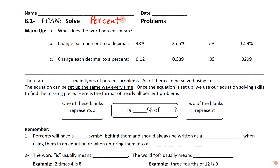The word percent is kind of like per century. A century is 100 years, so the word percent means per 100 — we're always comparing things to 100. It's a nice easy number to compare to.